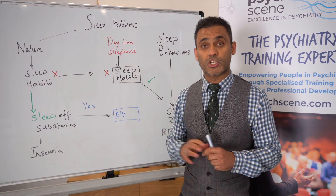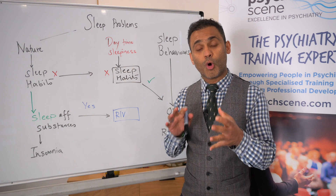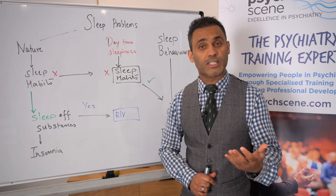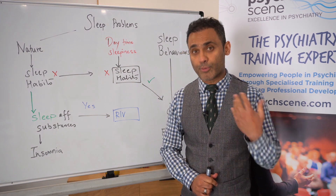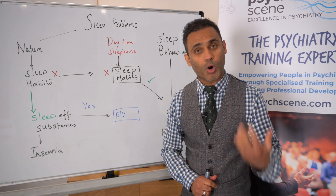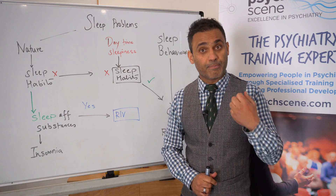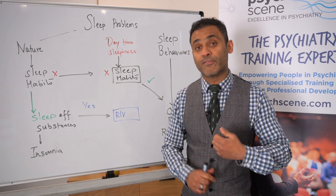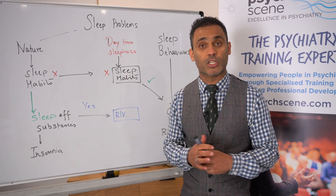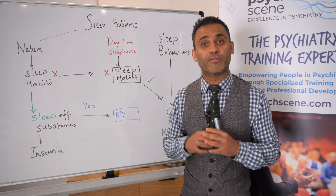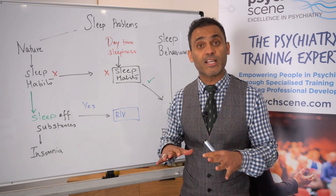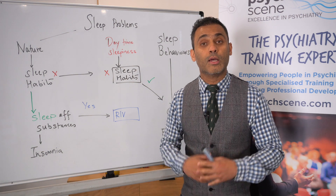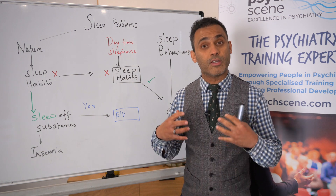Sleep disturbances can be quite comorbid with a number of psychiatric disorders. For example, if there's anxiety and preoccupation and worries, then people might find it difficult to fall asleep. If there's agitation, many individuals tend to have difficulty staying asleep. For example, in post-traumatic stress disorder, people can have nightmares.